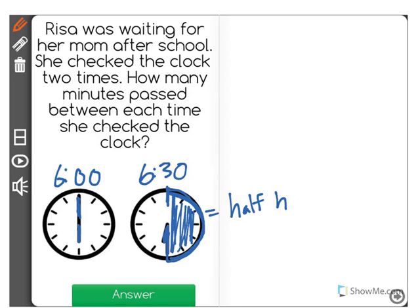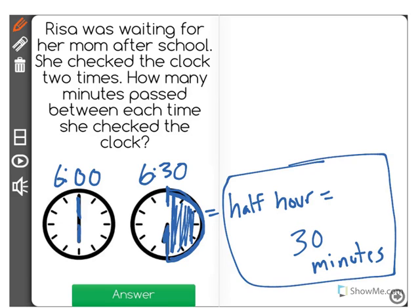When half of the clock has been traveled around by the minute hand, it's one half of an hour, or in this case we also can call it 30 minutes because the question is asking how many minutes passed. So a half hour equals 30 minutes, that's how much time passed there.